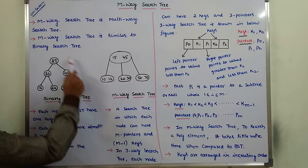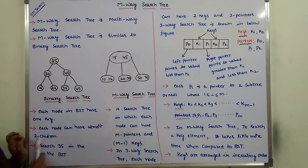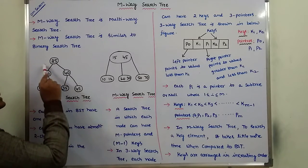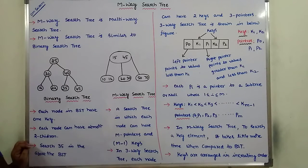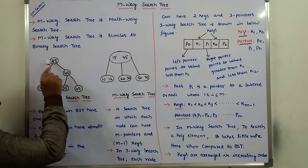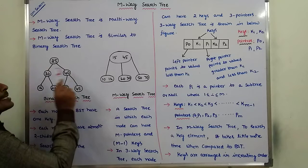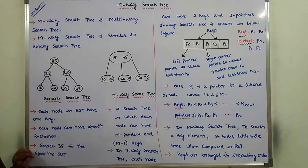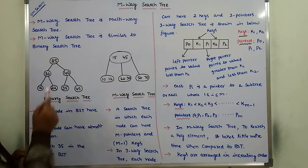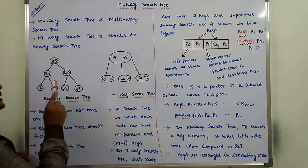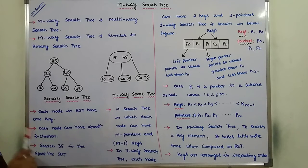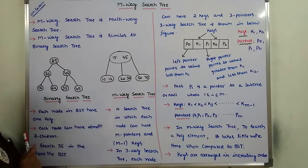How can the search operation be done in the Binary Search Tree? Suppose we want to search 35. First, 35 is compared with the root node key element, that is 25. 35 is greater than 25, so go to the right subtree. Here, 40 is there. 40 is compared with 35 — 40 is greater than 35, so go to the left subtree. Here, 35 is there. 35 is compared with 35 — both are equal and the key is matched, so our search is successful.